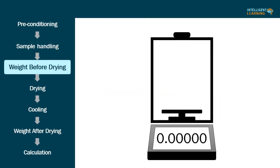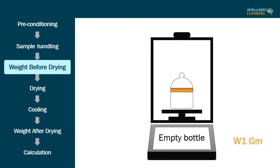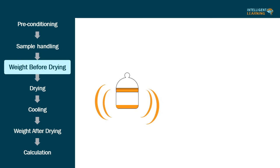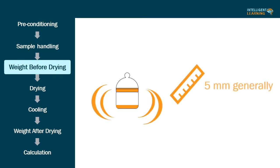Third step: weight before drying. Tare the balance pan. Tare the glass stoppered weighing bottle that has been dried for about 30 minutes under the same conditions to be employed in the determination, and cooled to room temperature in a desiccator. Put the test specimen in the bottle, replace the stopper, and accurately weigh the stoppered bottle and its contents. By gentle side-to-side shaking, distribute the test specimen as evenly as practicable to a depth of about 5 mm generally, and not more than 10 mm in the case of low bulk density materials.